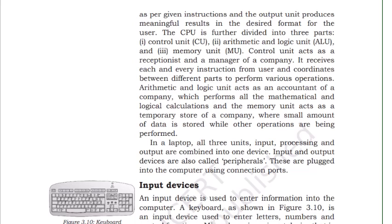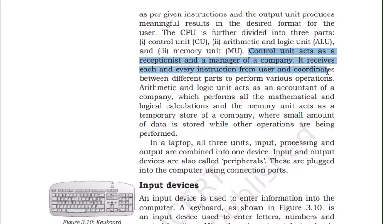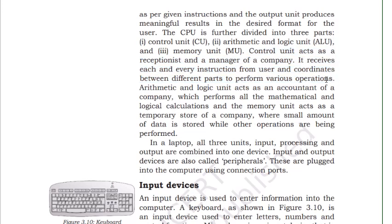Inside the CPU, we can divide it into three parts: the Control Unit, the Arithmetic and Logical Unit (ALU), and the Memory Unit (MU). The Control Unit acts like a receptionist and manager of a company — it receives every instruction from the user and coordinates between parts to perform various tasks, deciding what to do, where to do it, how to do it, which memory is required, and what part is to be executed.